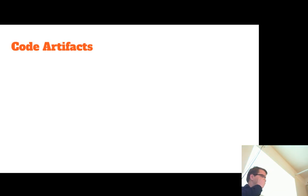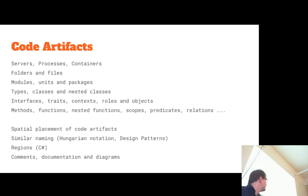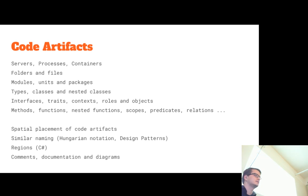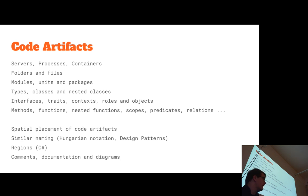Starting with some terminology about code artifacts — by that I mean anything you write in code or that is a result of programming. This is a general term for everything we do. It includes actual servers, processes, containers, folders, files, classes, rows, predicates, relations, and whatever else.